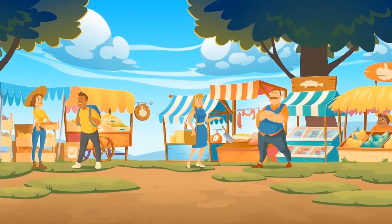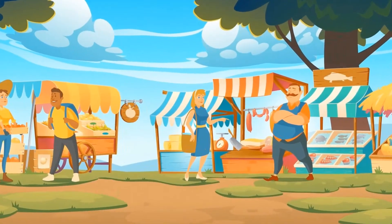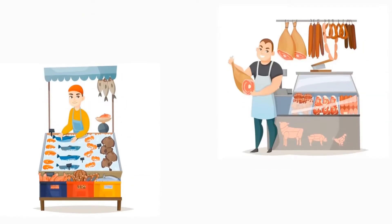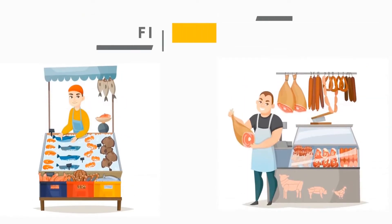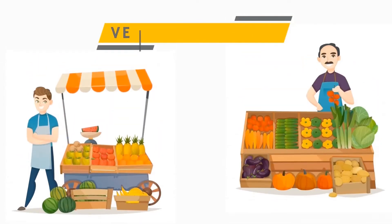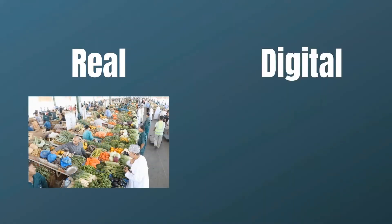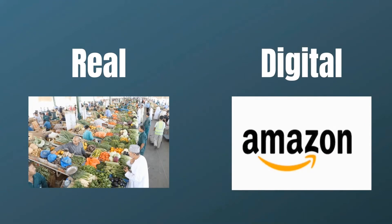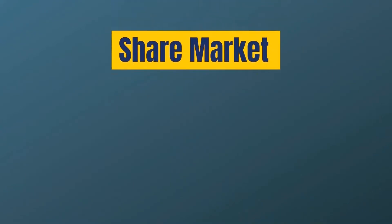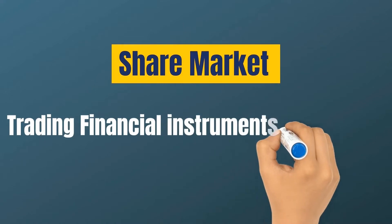In a market, customers and sellers come together to trade items like fish and vegetables. When trading fish, the place is known as the fish market, and when trading vegetables, the place is known as the vegetable market. Markets might be real-world or digital, such as those on Amazon and Flipkart. The term share market or stock market refers to trading financial instruments like shares.